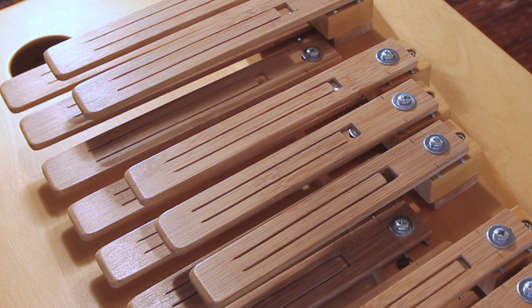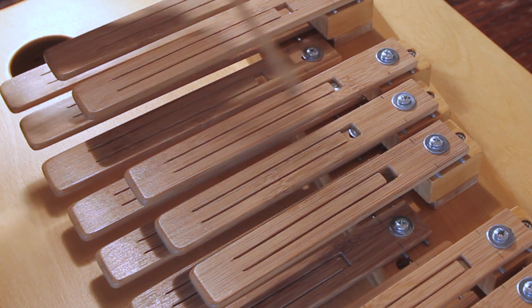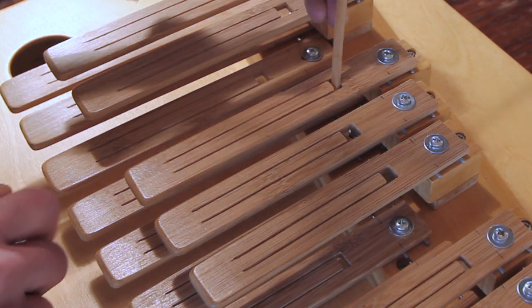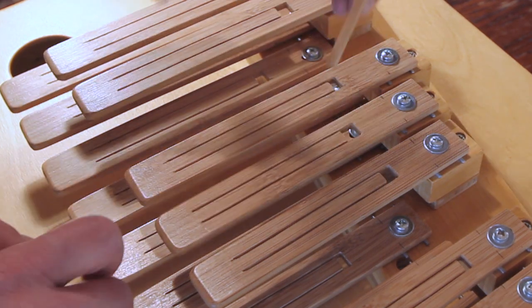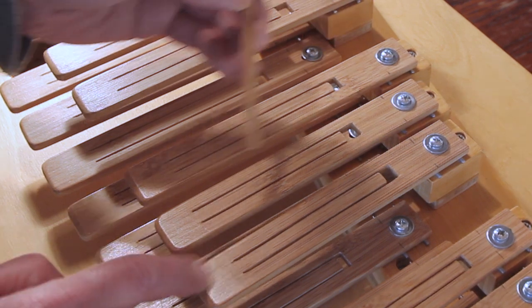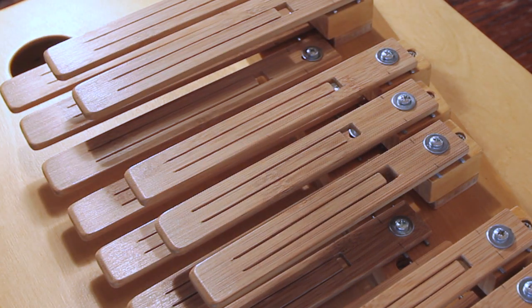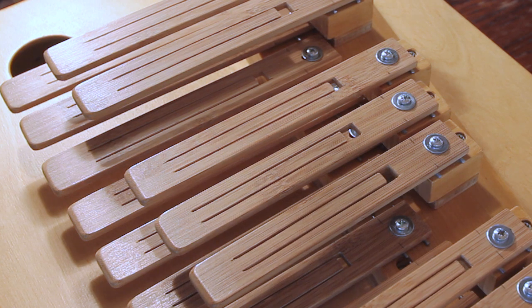So one technique I use is to cut out an inner tongue in each tine and this is tuned to the octave. I explained this in a previous video how this works.